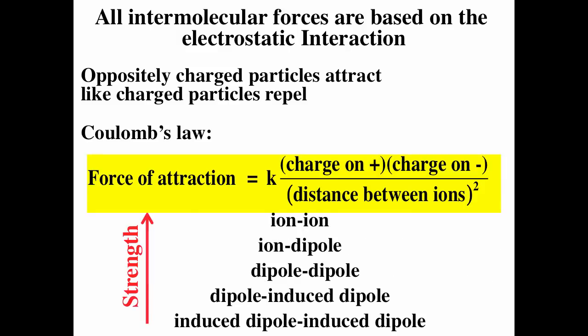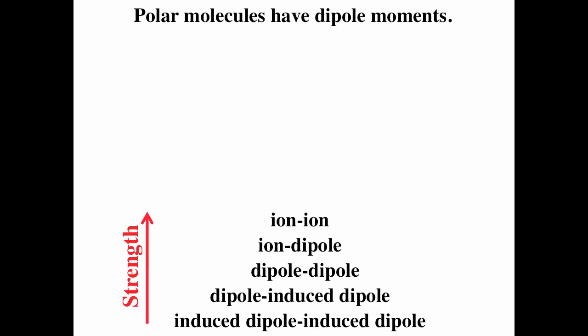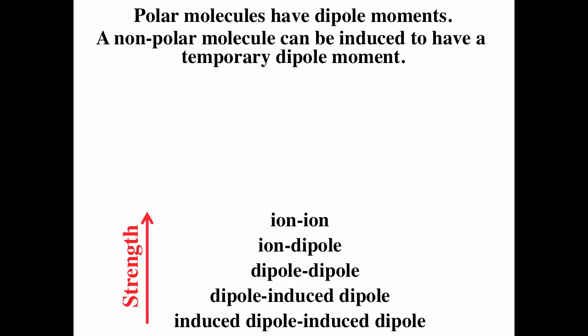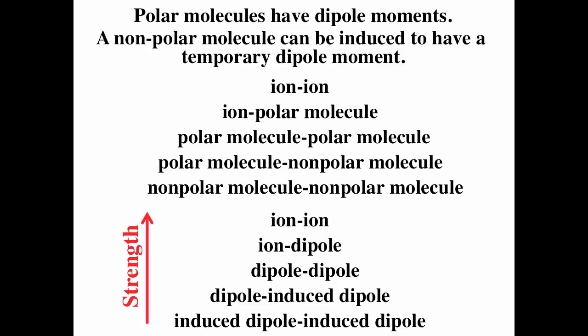We can break down the different intermolecular forces into: ion-ion, ion-dipole, dipole-dipole, dipole-induced dipole, and induced dipole-induced dipole. Polar molecules have dipole moments, so dipole-dipole means interaction between two polar molecules. A nonpolar molecule can be induced to have a temporary dipole moment. Ion-ion is the interaction between two ions; ion-dipole is interaction between an ion and a polar molecule; dipole-dipole is between two polar molecules; dipole-induced dipole is between a polar molecule and a nonpolar molecule.